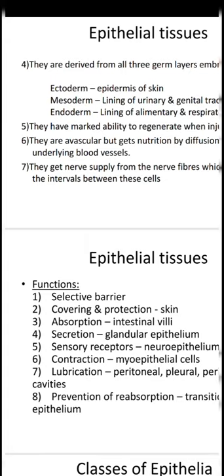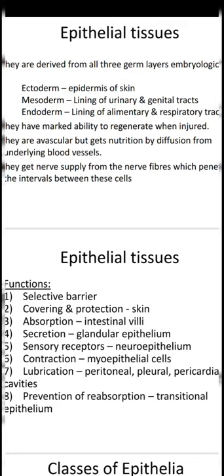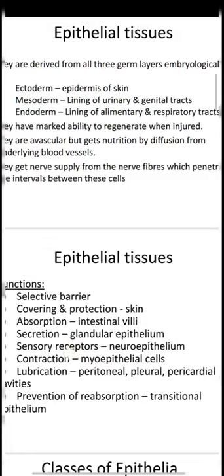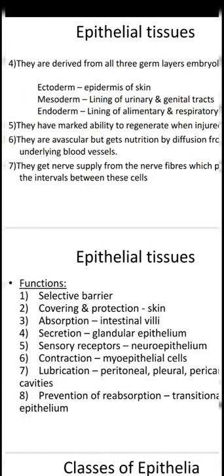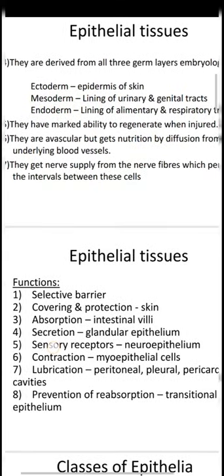Epithelium arises from all three layers because it arises along with the organ. The outermost layer of the skin — the epidermis — arises from ectoderm. The genital tract and urinary tract arise from mesoderm, so their epithelium also arises from mesoderm. Whereas the alimentary tract, the gastrointestinal tract, and respiratory tract arise from endoderm, so their epithelium also arises from the endoderm. It arises from all three layers along with the respective organ.